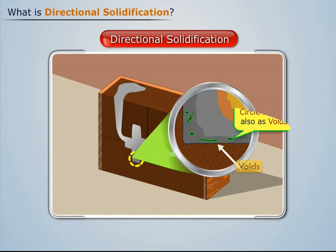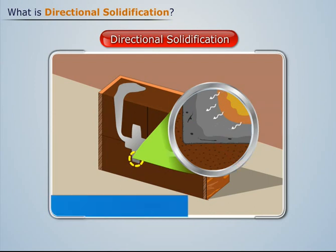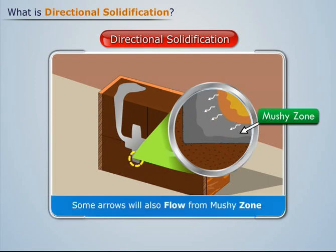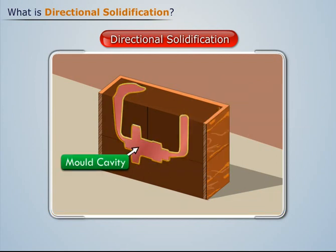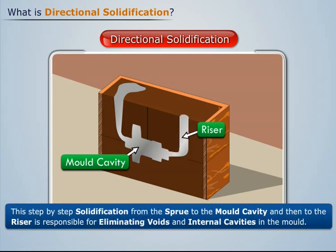When the molten metal solidifies in the mold cavity, it creates voids inside it. These voids are filled by the liquid metal that flows from the mushy zone and liquid zone. After the mold cavity solidifies, the molten metal solidifies at the riser. This step-by-step solidification from the sprue to the mold cavity and then to the riser is responsible for eliminating voids and internal cavities in the mold.